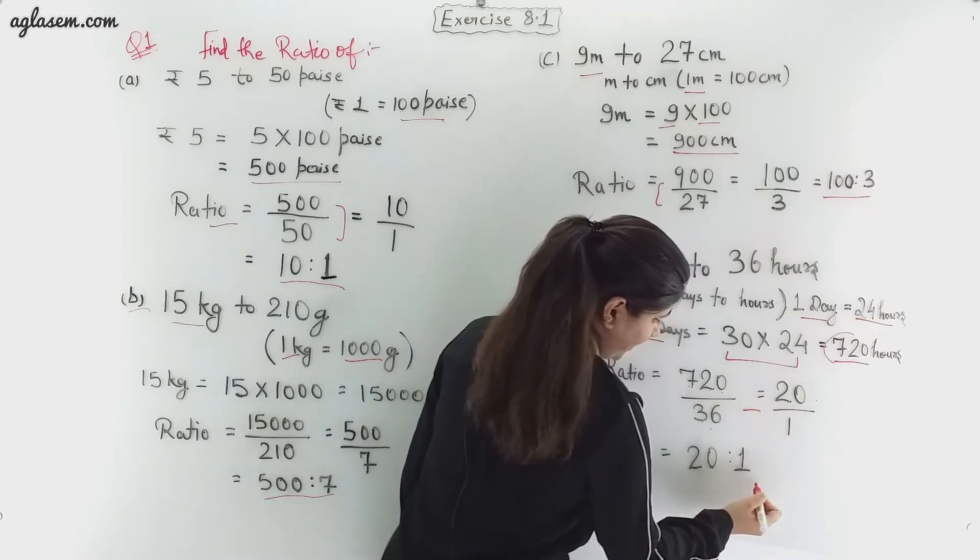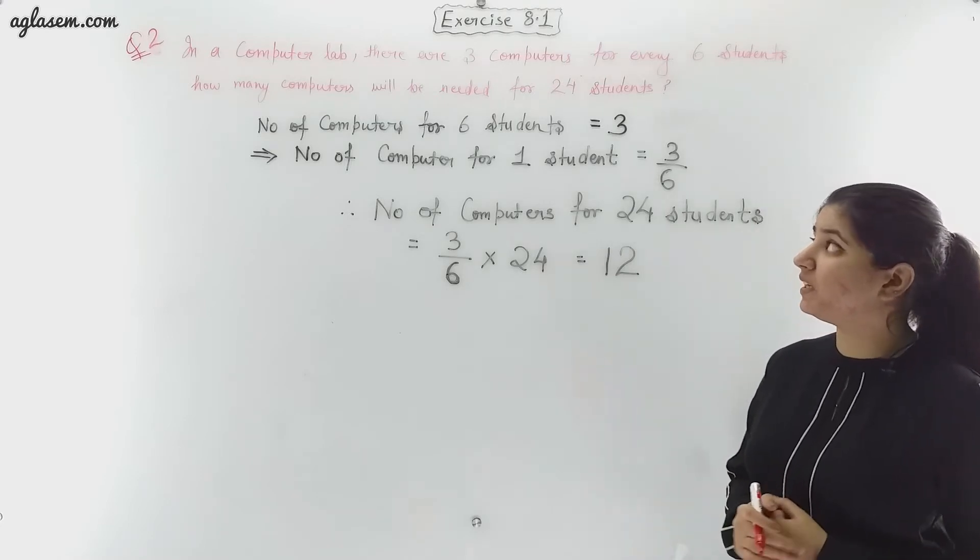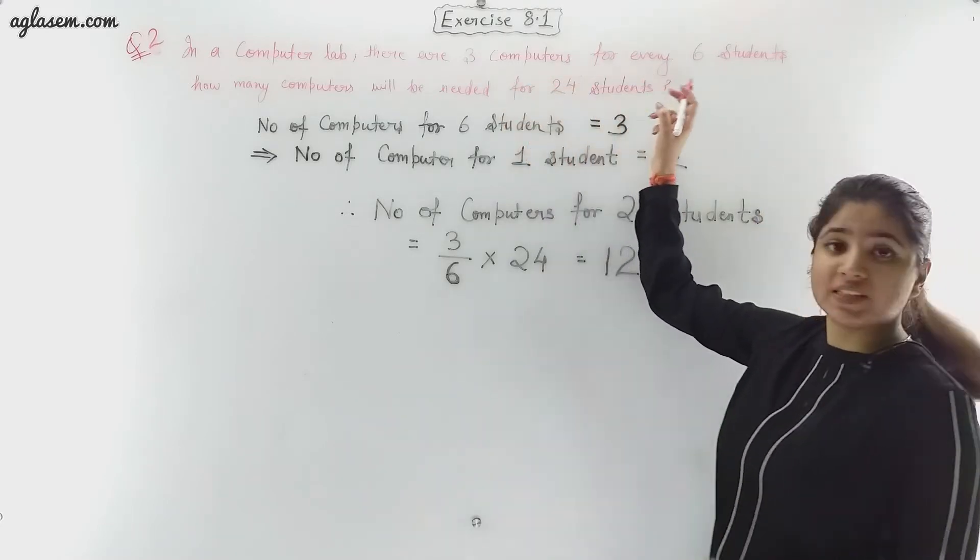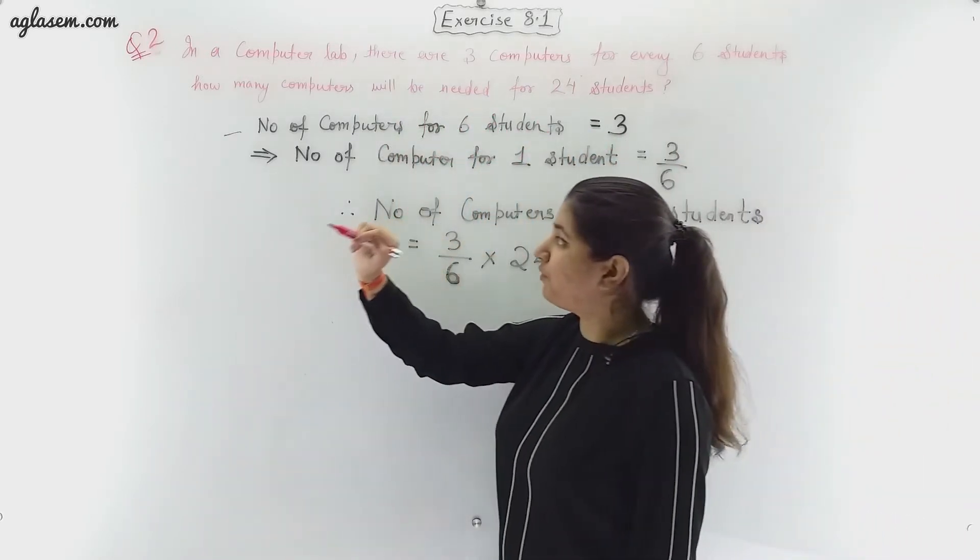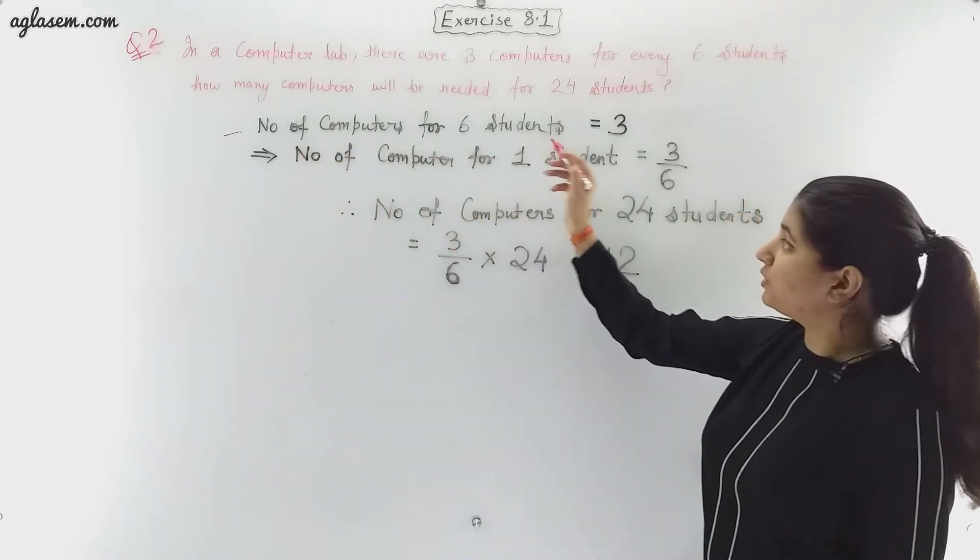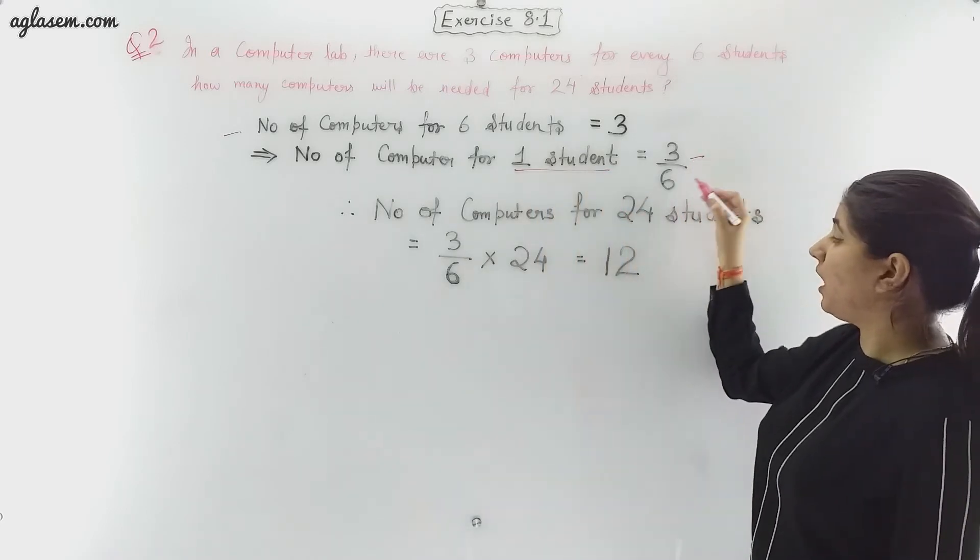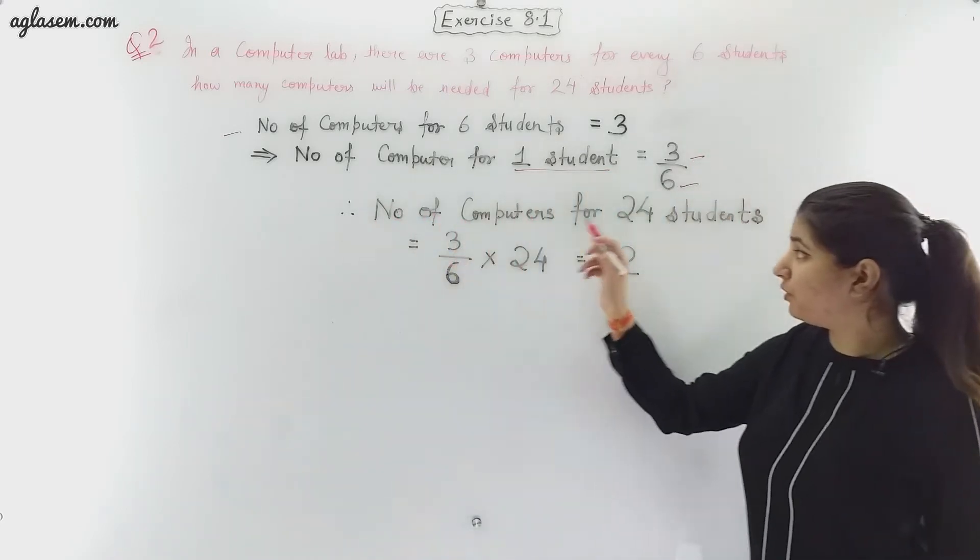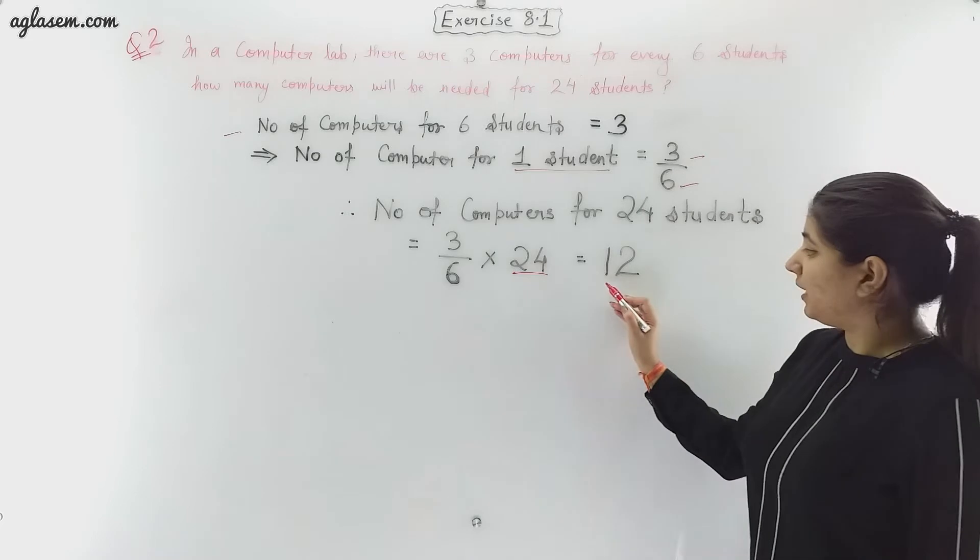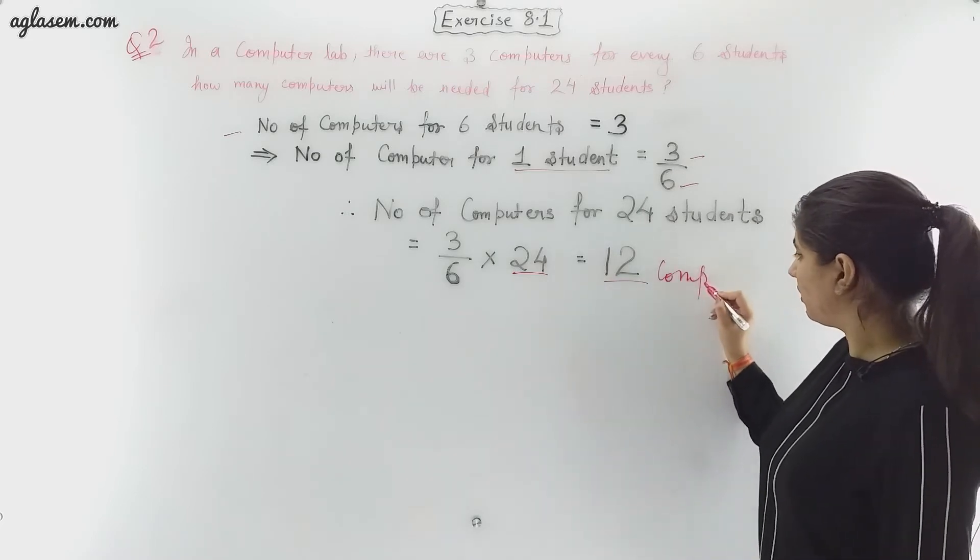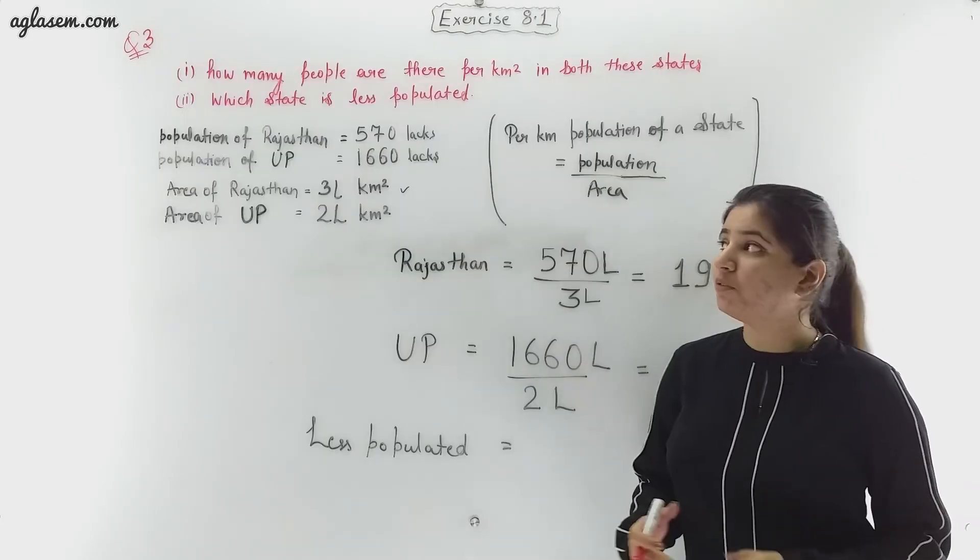Now let's come to the second question which says that in a computer lab there are three computers for every six students. How many computers will be needed for 24 students? Let's begin with the given information. Number of computers for six students is equal to three. Number of computers for one student is equal to 3 upon 6. Therefore, number of computers for 24 students will be 3 upon 6 into 24, that is 12 computers.